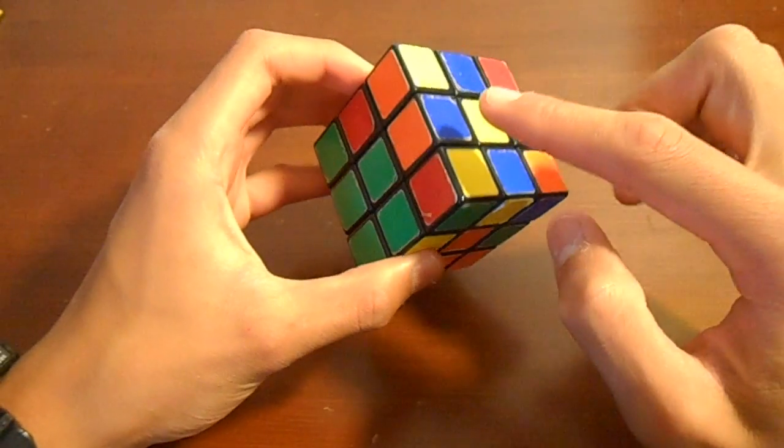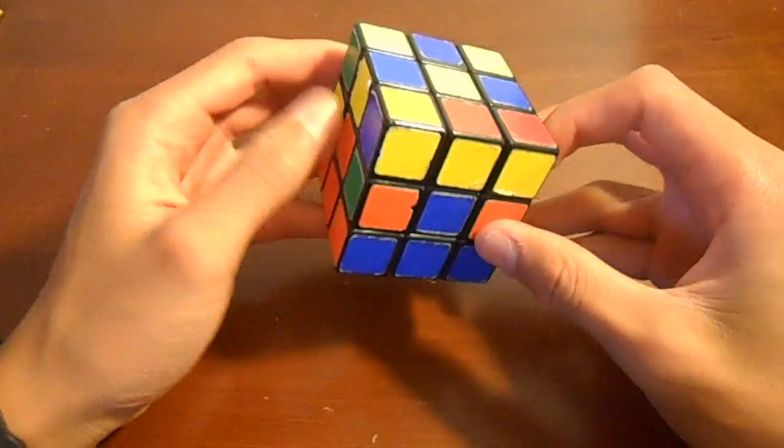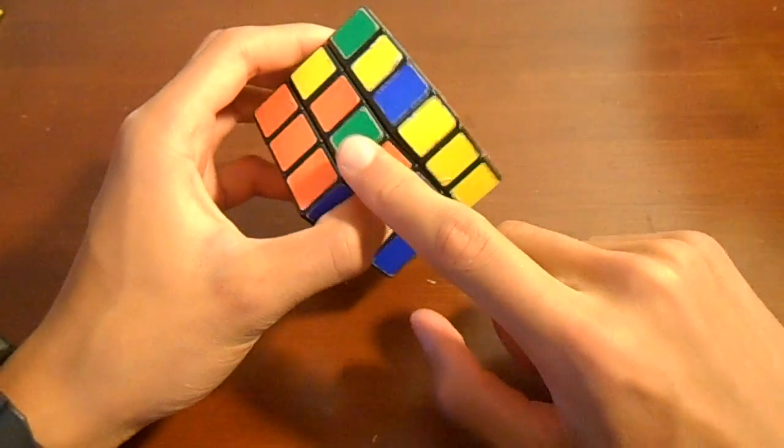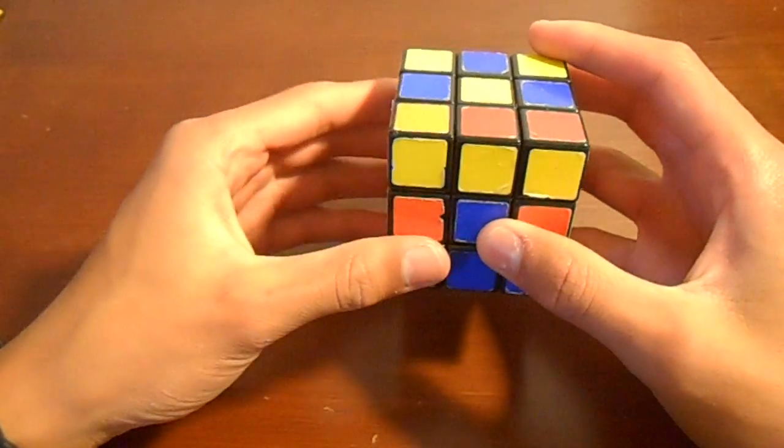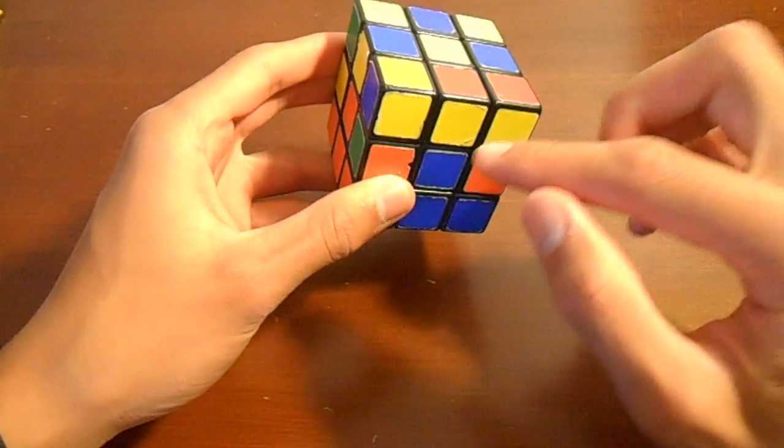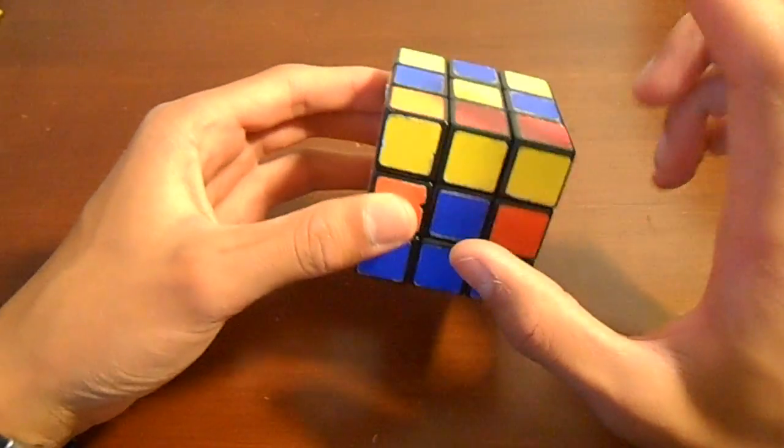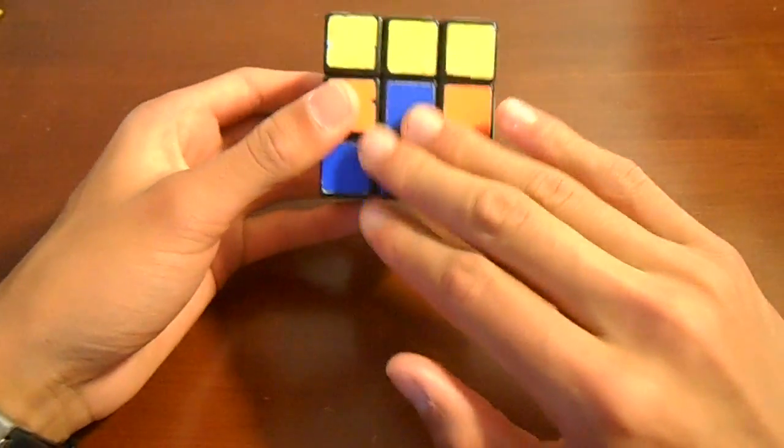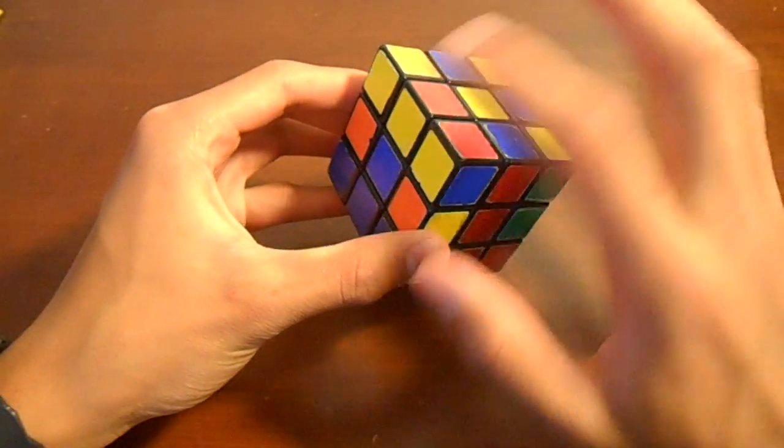So, for example, this blue-orange edge piece will go here. So we can just use this as our example. Now how we're going to orient this is actually just how it is right now. With the top sticker color being opposite of the side, or however you want to remember that. But basically just in this orientation.